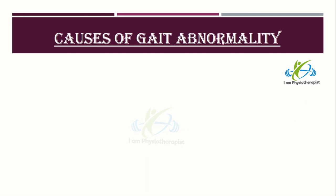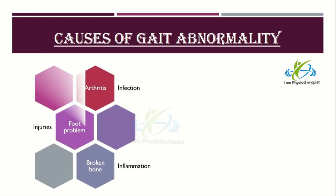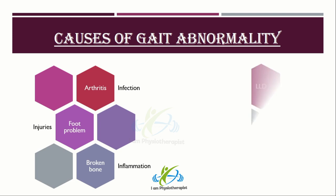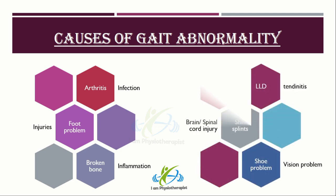General causes of abnormal gait may include arthritis of the leg or foot joints; foot problems such as a callus, ingrown toenail, wart, pain, skin sore, swelling, or spasm; broken bone; infection and injuries; leg length discrepancy; inflammation or swelling of the muscles; shin splints; shoe problems; tendinitis; and brain, spinal cord, and peripheral nerve diseases and vision problems.